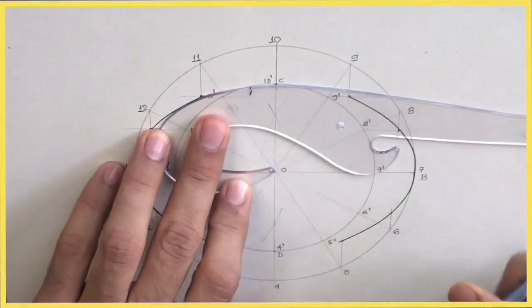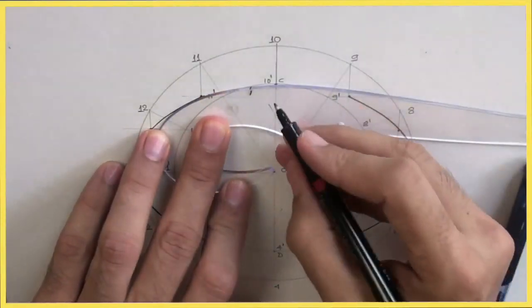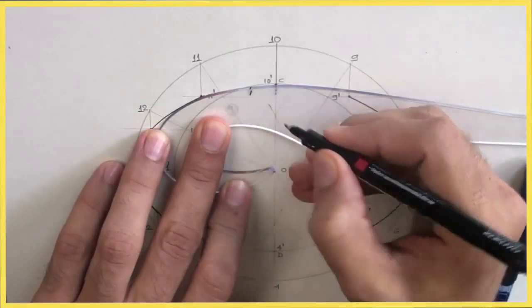See, from this point to this point and it should be a little bit continuous. It's called merging.